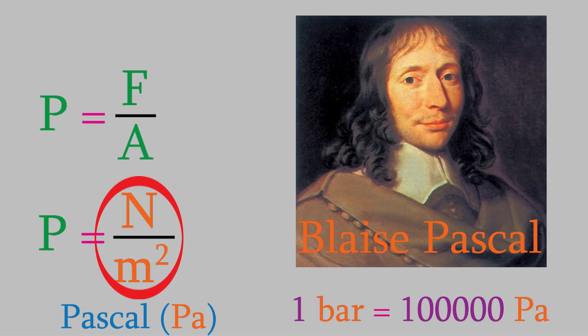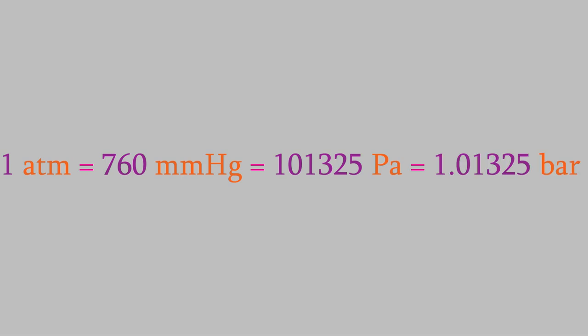So we now have four different pressure units to think about: millimeters of mercury, atmospheres, Pascals, and bars. We can convert between these by using atmospheric pressure as a guide. As we saw earlier, one atmosphere is equal to 760 millimeters of mercury, and that's also equal to 101,325 Pascals, or 1.01325 bars.